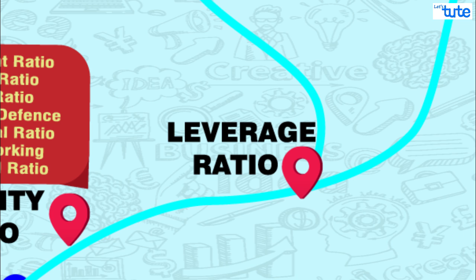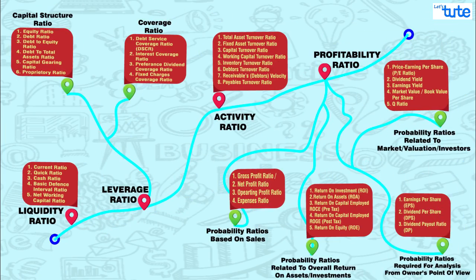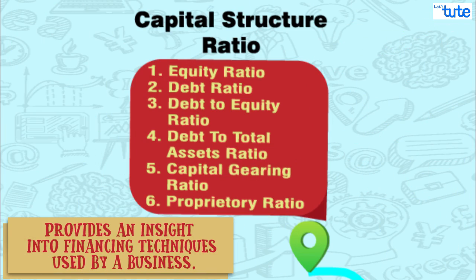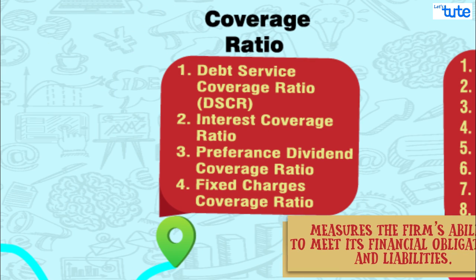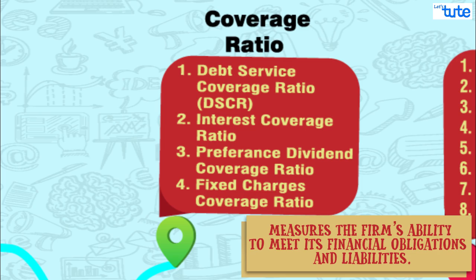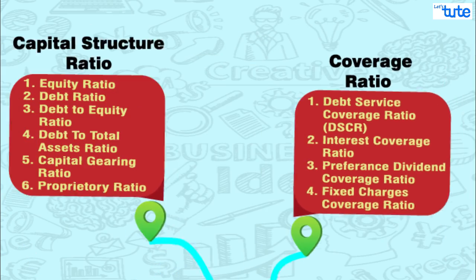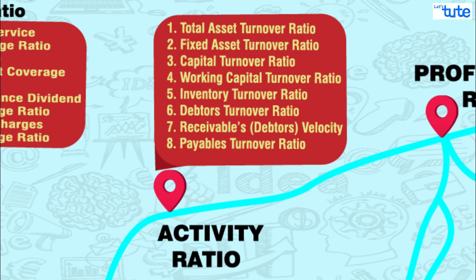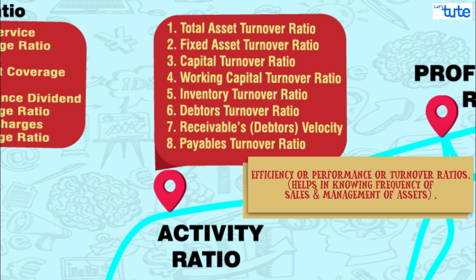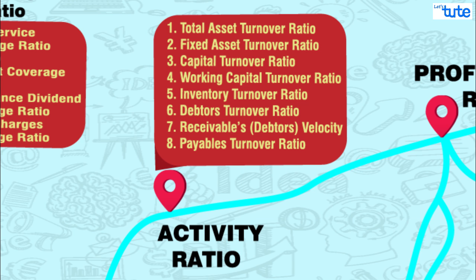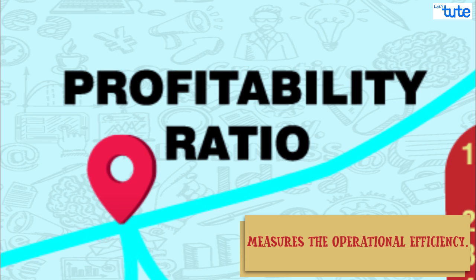The leverage ratios can be further classified into two subcategories: capital structure ratios, which provide insight into the financing techniques used by the business and long-term solvency position; and coverage ratios, which measure the firm's ability to meet its financial obligations and liabilities. The third type is activity ratios, also termed as efficiency, performance, or turnover ratios, which indicate the frequency of sales with respect to assets and evaluate the efficiency with which the firm manages and utilizes its assets. The last type is profitability ratios, which measure the operational efficiency of the firm and reflect the final result of business operations.